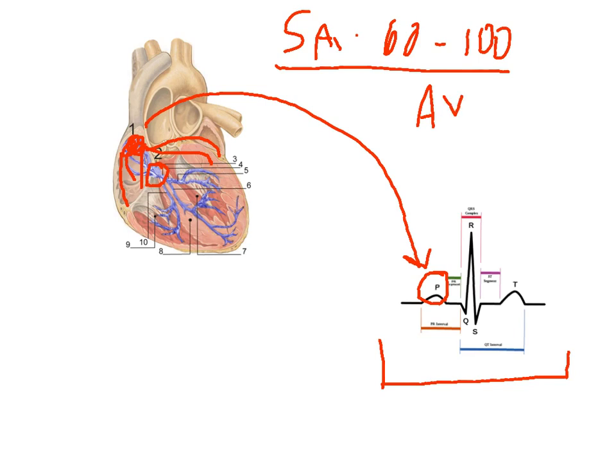And the AV node stalls that signal or it pauses it just for a brief moment of time. And that allows the atria to contract and to pump blood in the ventricles or preload the ventricles with blood. And that little pause of the impulse at the AV node is right here. So you see this first bump, the P wave, and then you see kind of this flat line down here.